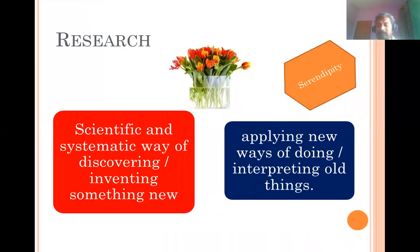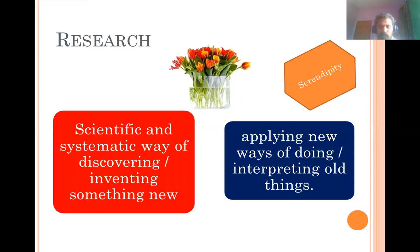What is research basically? Research is the systematic, scientific method of either discovering or inventing something new — either finding things that already exist but haven't been discovered, or finding something entirely new. You apply old concepts to get something new, or apply entirely new concepts. There's also something called serendipity — accidental discoveries — where instead of what you aimed at, you got something else. Even that is termed as research.